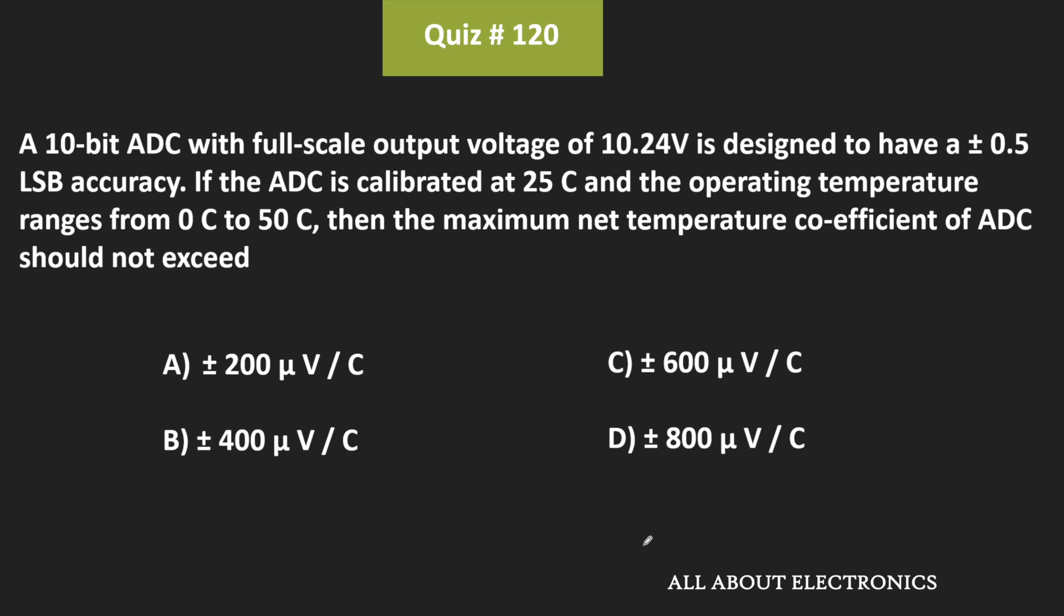So this ADC is designed in such a way that its accuracy is at least equal to ±0.5 LSB. Now during the calibration, this ADC is calibrated at 25°C and we have been given that the operating range of this temperature is varying from 0 to 50°C. So here we have been asked to find the maximum allowable temperature coefficient of this ADC.